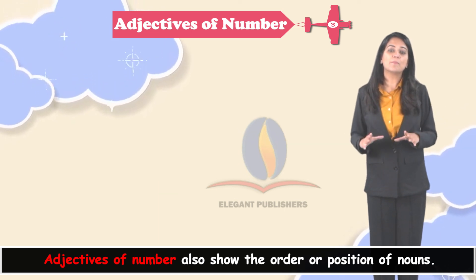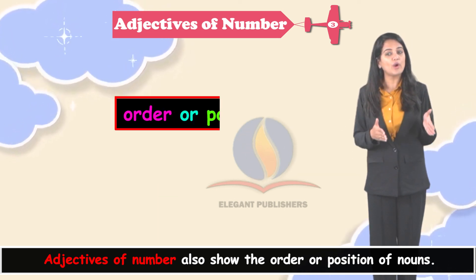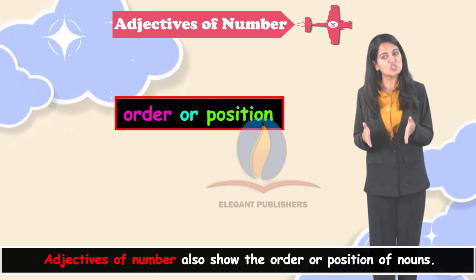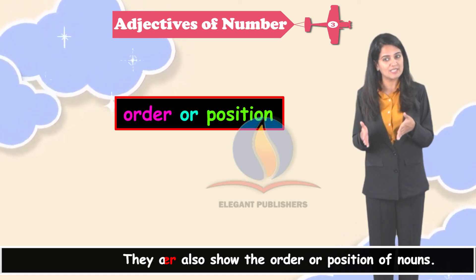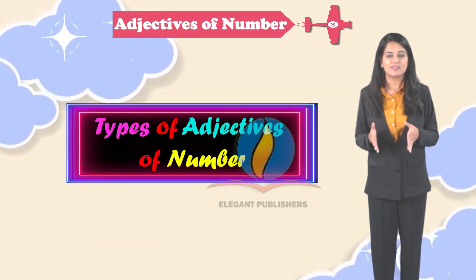Adjectives of quantity show the probable amount of a noun. They do not give the exact number and are used with only uncountable nouns. They answer the question 'how much.' Adjectives of number also show the order or position of nouns. They answer the question 'how many.'